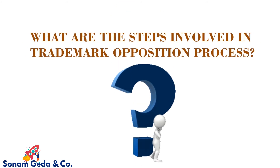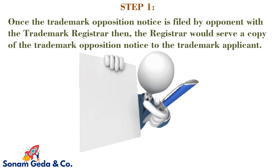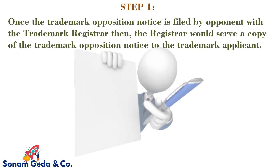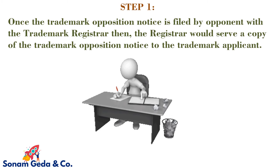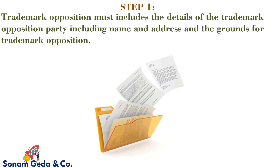Step 1: Once the trademark opposition notice is filed by the opponent with the trademark registrar, the registrar would serve a copy of the trademark opposition notice to the trademark applicant. The trademark opposition must include the details of the opposition party, including name and address, and the grounds for trademark opposition.